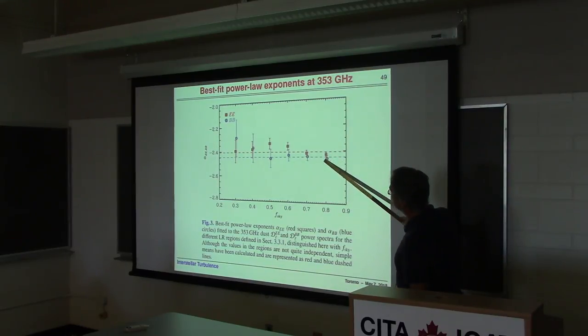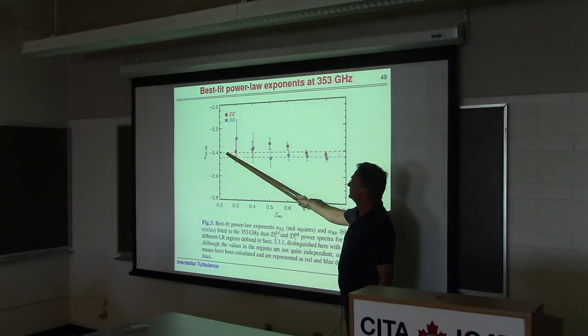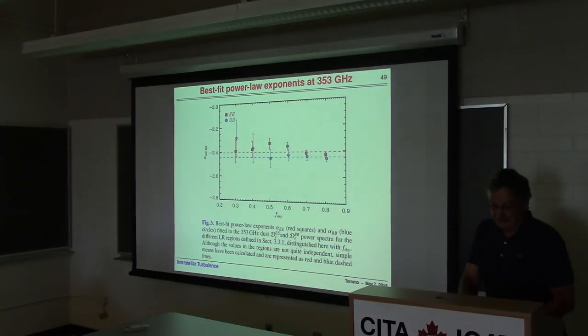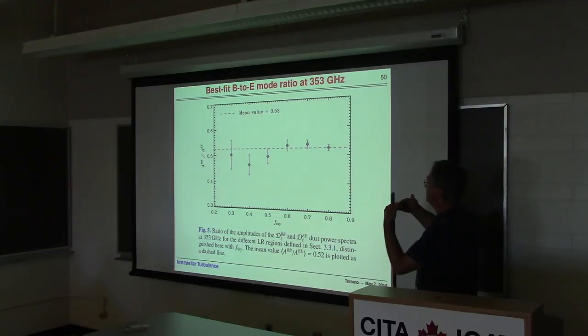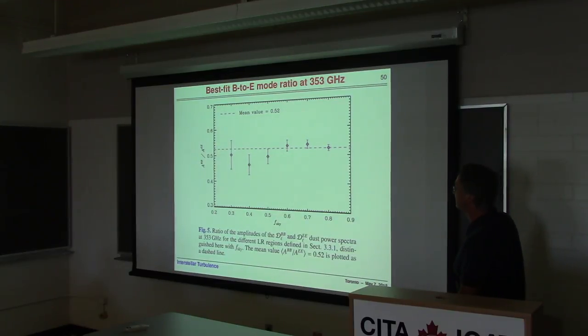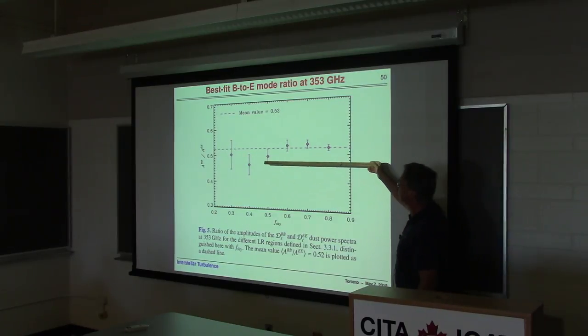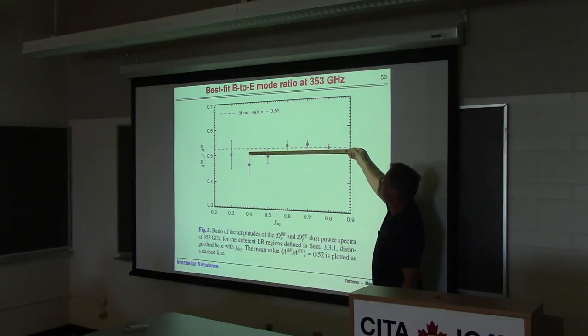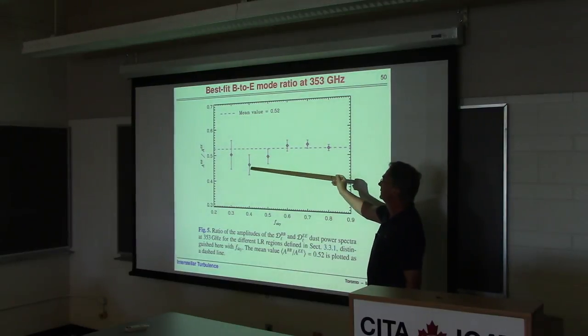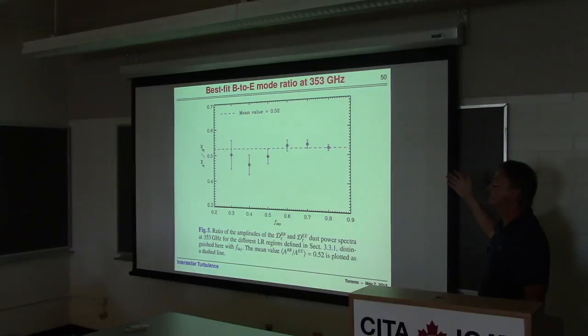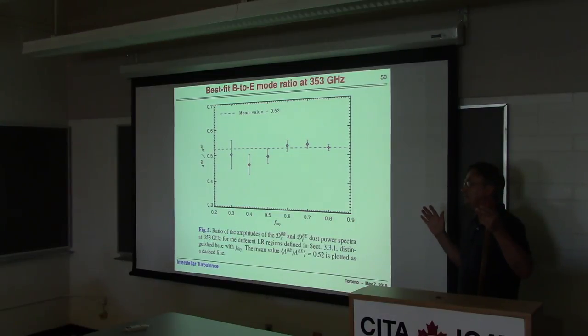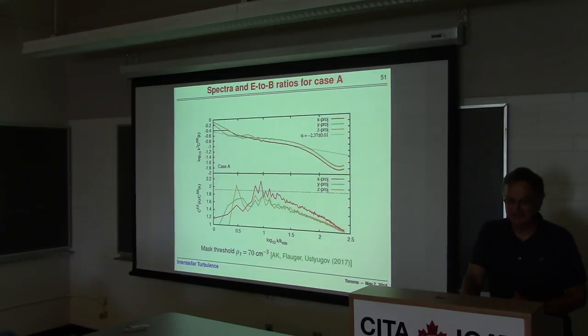You can use thermal dust emission because dust gets aligned with magnetic field to map the large-scale magnetic field in the Milky Way. Then you want to subtract this and see the structure of the actual CMB field. To do that, you have to mask parts of the sky. This gray mask kills the signal in the Milky Way disk. Then there's black, blue, dark blue, red, and so on, progressively going to the galactic poles. Right here, the signal should be more related to CMB and less to galactic contamination.